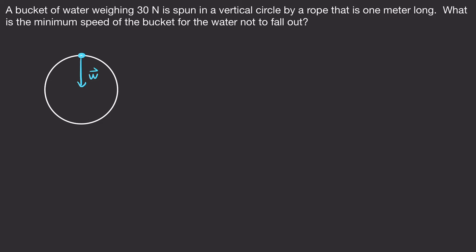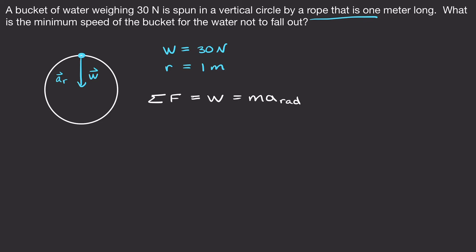The 30 Newton weight acts in the same direction as the radial acceleration, because when things move in a circle they accelerate inward to change their direction. The weight is 30 Newtons and the radius of circular motion is the length of the rope, or 1 meter. Summing forces in the radial direction, we only have the weight, set equal to mass times centripetal acceleration.